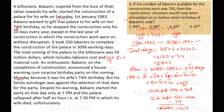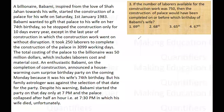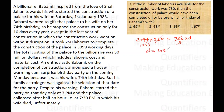Next: if the number of labourers available were 750 instead of the initial 250, then the construction would have been completed on or before which birthday of the billionaire's wife? Initially it took 3099 days with 250 labourers. So total work = 250 × 3099. With 750 labourers, the days taken D = (250 × 3099) / 750 = 1033 days.